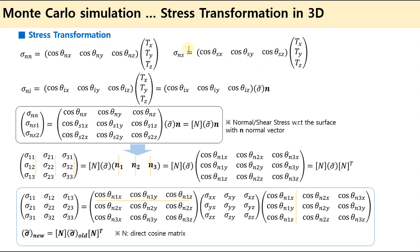We can express normal stress and shear stress this way: the row matrix of the DCM multiplied by the column matrix of the traction vector. In general, if we have an N vector surface, the i-direction component will be expressed this way. As we know, the traction vector will be expressed as the stress tensor times normal vector N. Then sigma_nn, sigma_ns1, and sigma_ns2 as a column matrix will be the direction cosine matrix times the stress tensor times normal vector N.